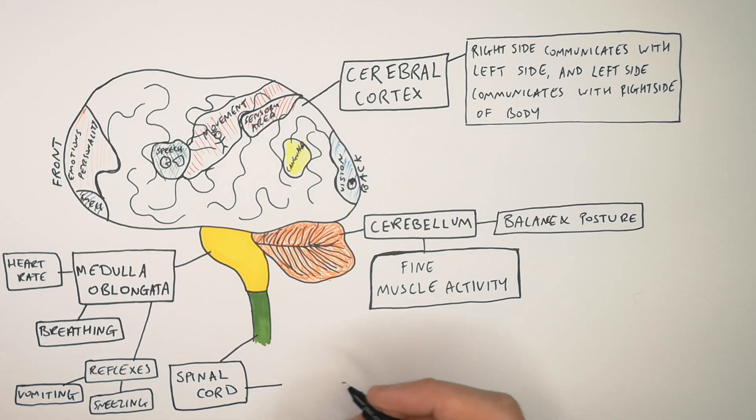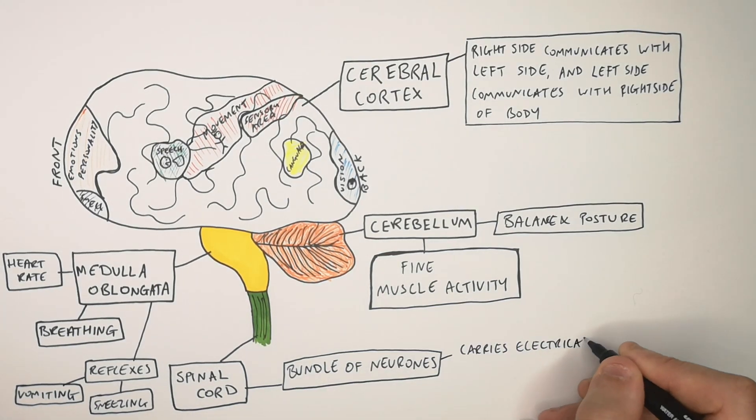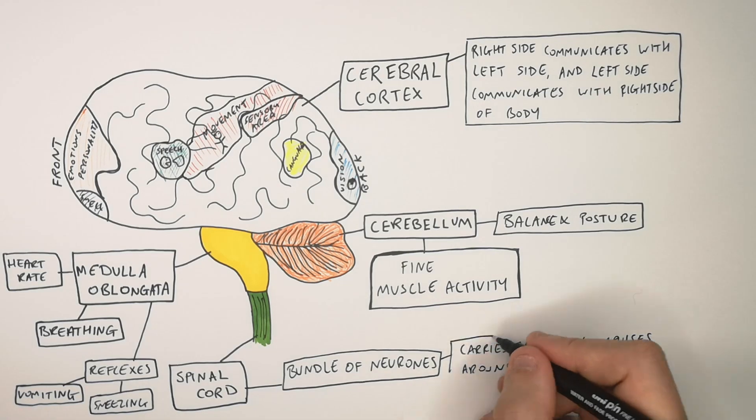The spinal cord that leads away from the brain is a bundle of neurons that carries electrical impulses around the body away from the brain.